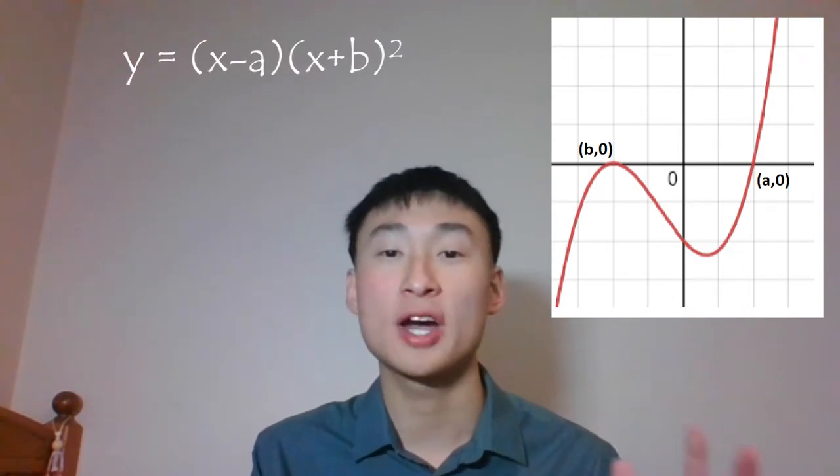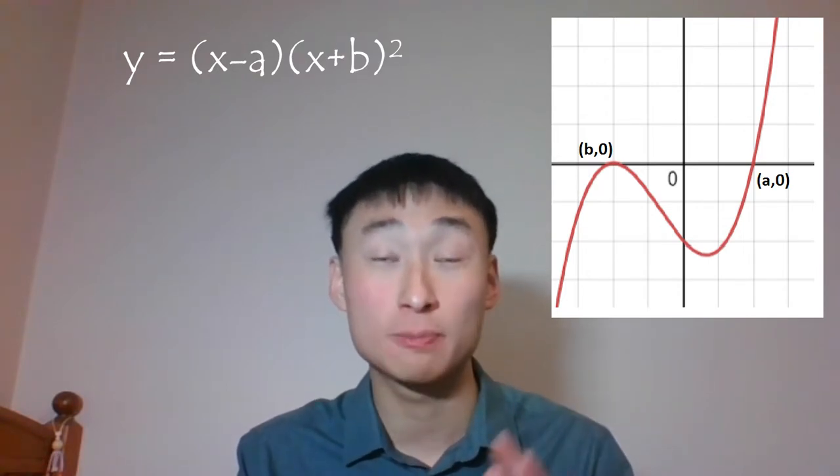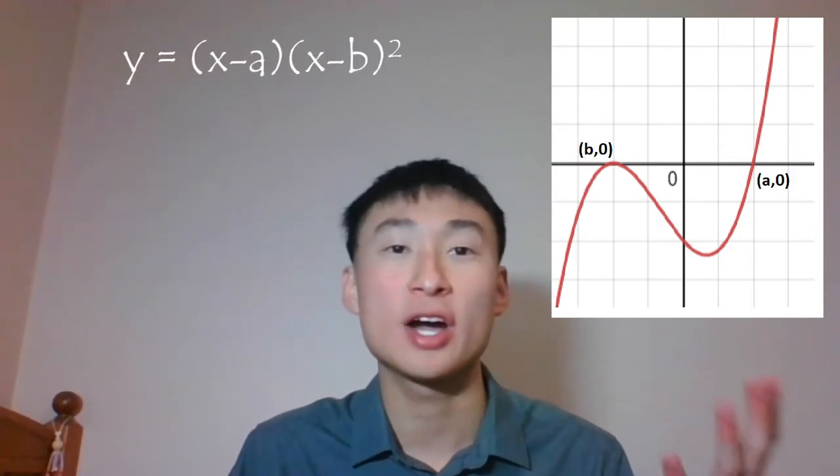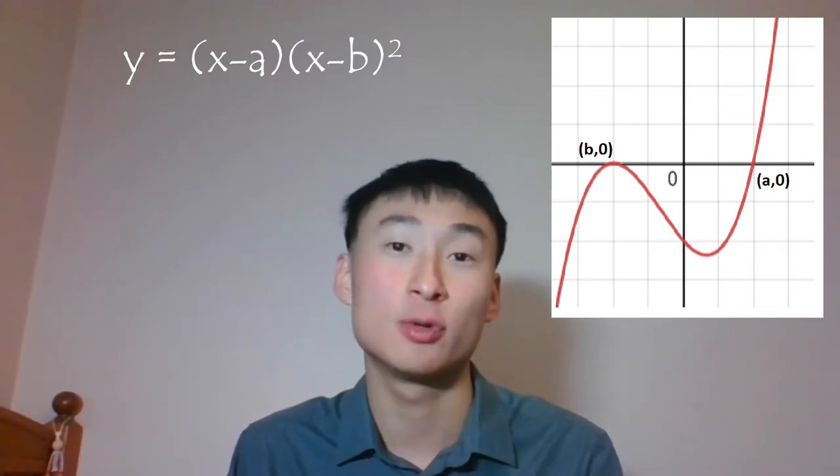The next thing is x-axis intercepts, and this comes up a lot. Let's say we have a cubic and we've been told that those two points are (a, 0) and (b, 0). What is the equation of this cubic? Assuming the coefficient of x cubed is 1, lots of students think it's y equals (x minus a)(x plus b) squared — that is wrong. The reason is that b is already negative, so its sign is already accounted for. The correct answer is y equals (x minus a)(x minus b) squared.